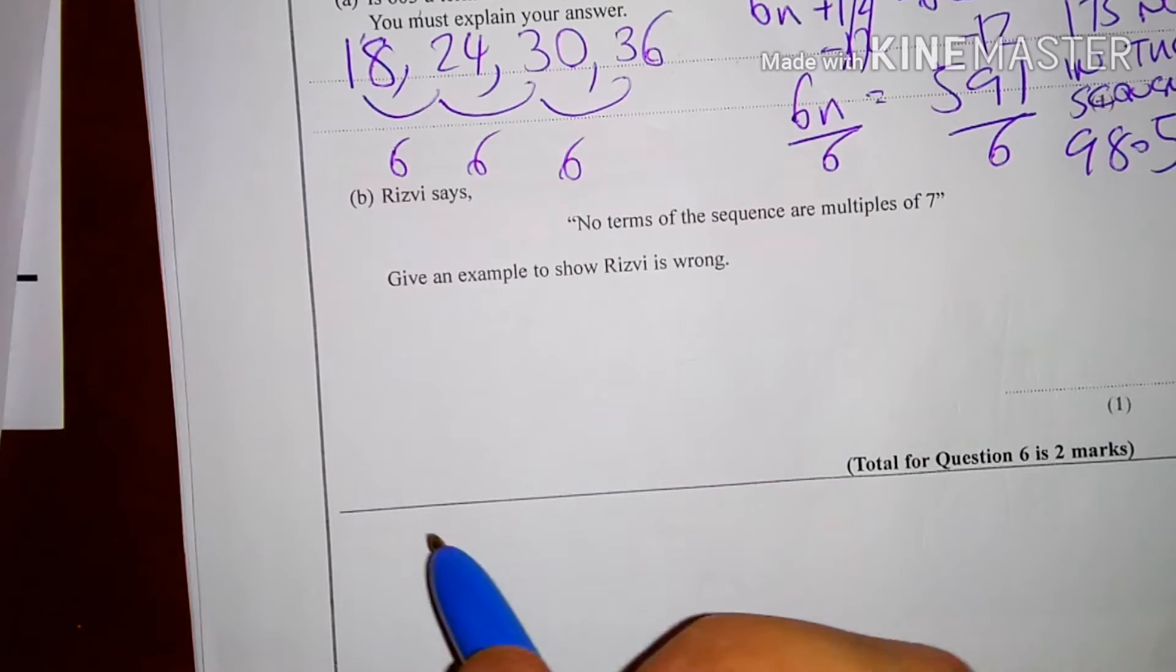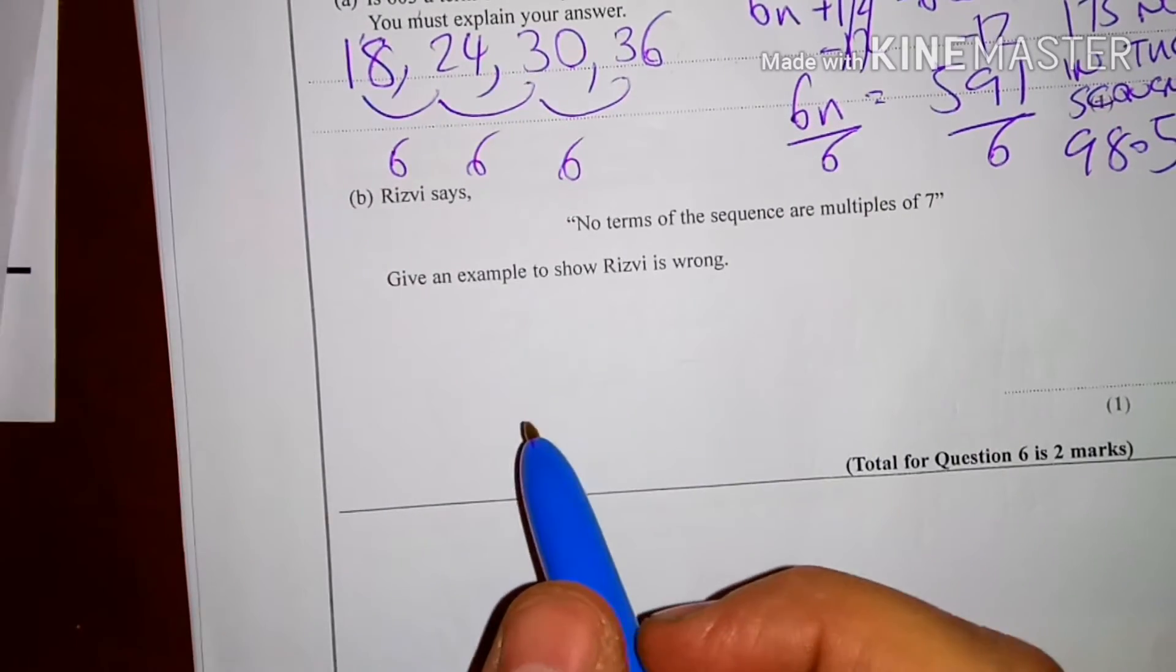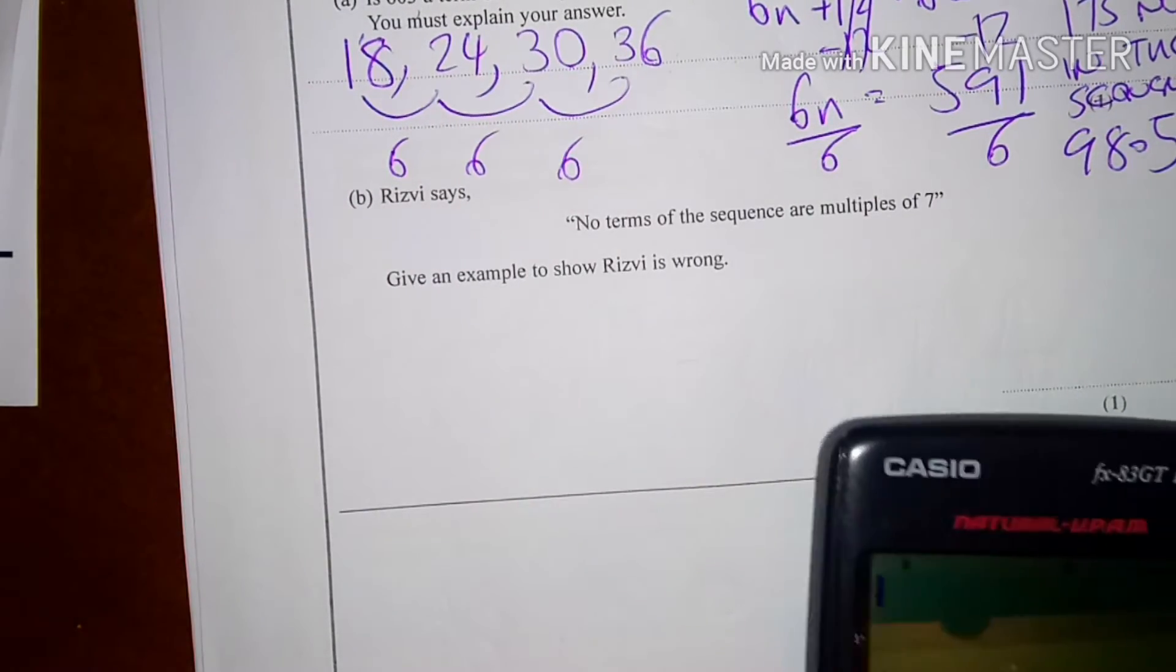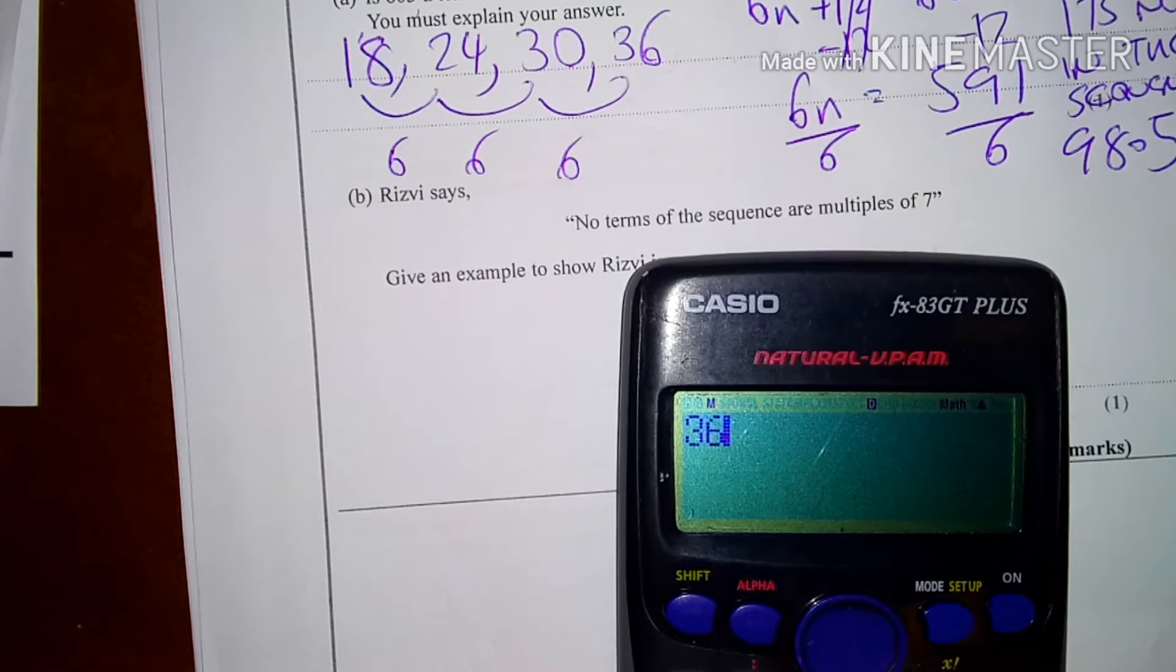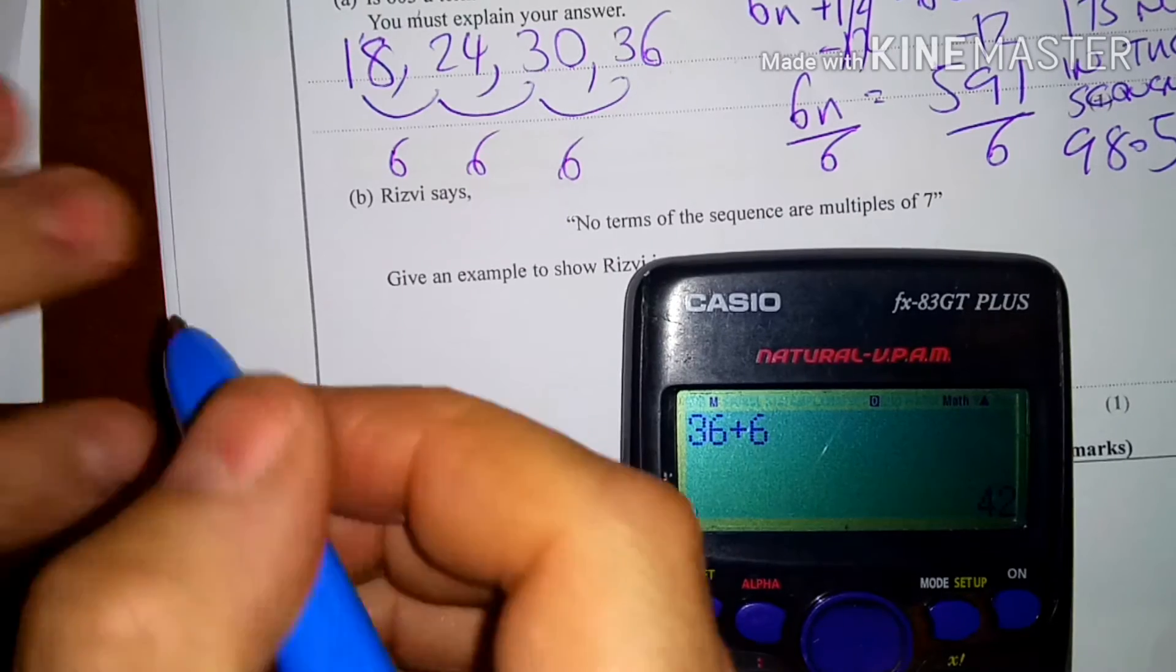Easiest way is just to keep going along in your sequence just to see if we do hit a multiple of 7. Okay. Now, we're on to 36, and it's going up in 6s. So 36 add 6 is 42.